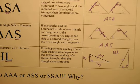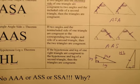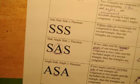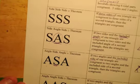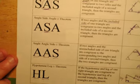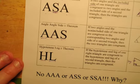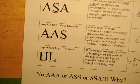Recapping: we've got Side-Side-Side, Side-Angle-Side, Angle-Side-Angle, Angle-Angle-Side, and HL — the Hypotenuse-Leg theorem. Those are the five shortcuts for proving triangles congruent.